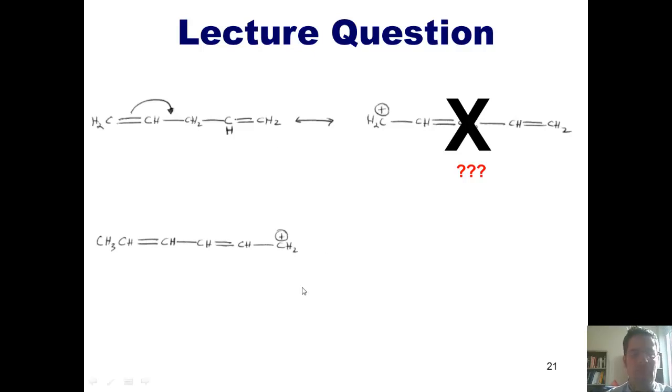Let's look at this example. I have a carbocation over here on the rightmost extreme, and I've got a single, double, single, double bond pattern. Is this a conjugated diene? Yes, it is. Can it experience resonance? Absolutely.